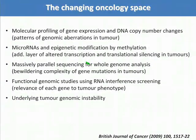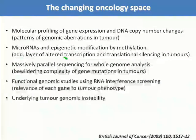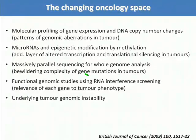There is currently a change ongoing in the oncology space in the sense that molecular profiling of gene expression and DNA copy number changes allows us to understand the patterns of genomic aberrations in tumors. Discoveries of microRNAs and epigenetic modification by promoter methylation are shown as an additional layer of transcriptional and translational silencing in tumors. The advent of massively parallel sequencing for whole genome analysis has illustrated the bewildering complexity of gene mutations in tumors, and we can use RNA interference screening to understand the relevance of each gene to tumor phenotype—all occurring against a background of tumor genomic instability.